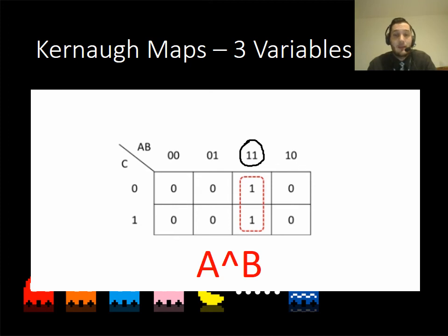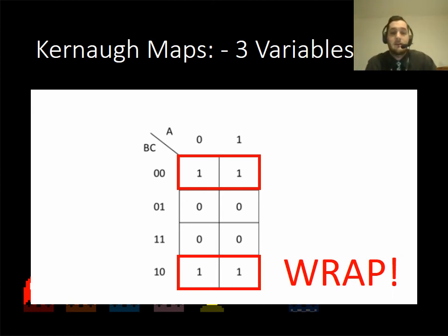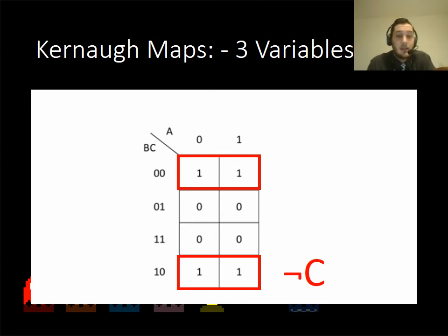Karnaugh maps don't always have straightforward patterns — they can get more complicated. This one we need to wrap around, imagining it as a four-way pattern. It actually represents NOT C, because the input C was zero and it doesn't matter what A or B is — whenever C is zero, the output is true. You can test this by trying NOT C on other parts of the map to verify your expression.